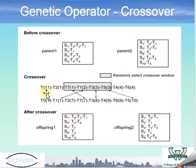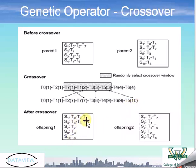Offspring 1 will also inherit all of the tasks that did not crossover — so offspring 1 gets T0, T2, T4, and T6, in addition to the crossover values of T7, T8, and T5. The same goes for offspring 2, which inherits the values from parent 2 that did not crossover, and then parent 1's crossover values.